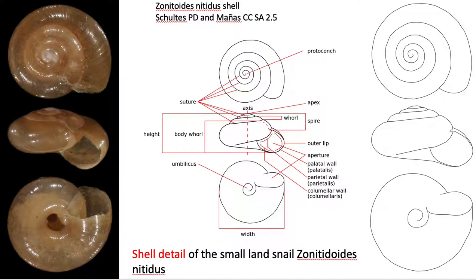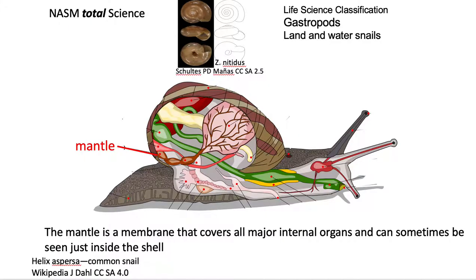Here's a diagram of more detail on a particular type of land snail. Under the shell, most of it is covered with the mantle, which covers all of the major internal organs. You can see some of the skin sometimes just on the edge of the shell.